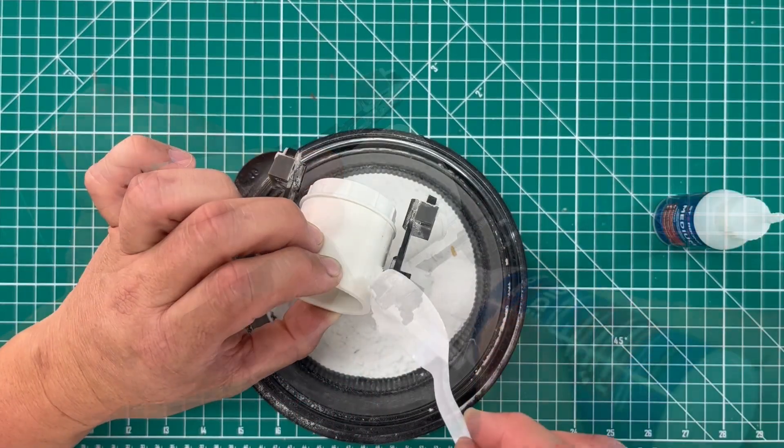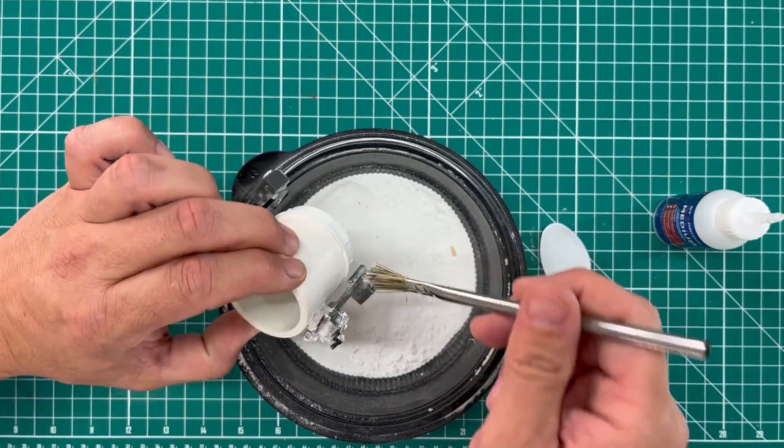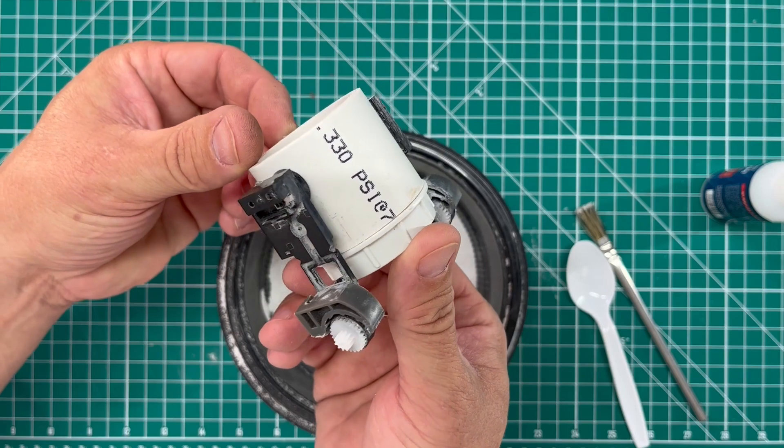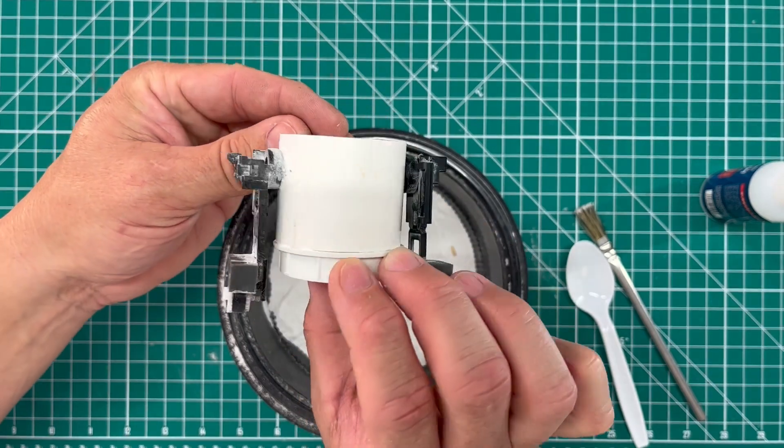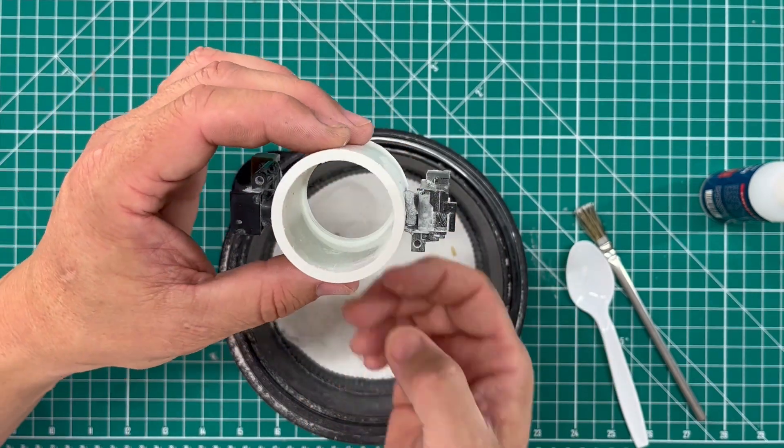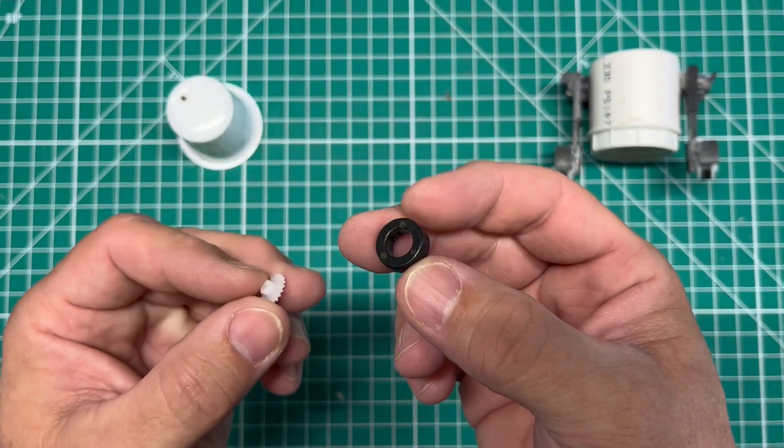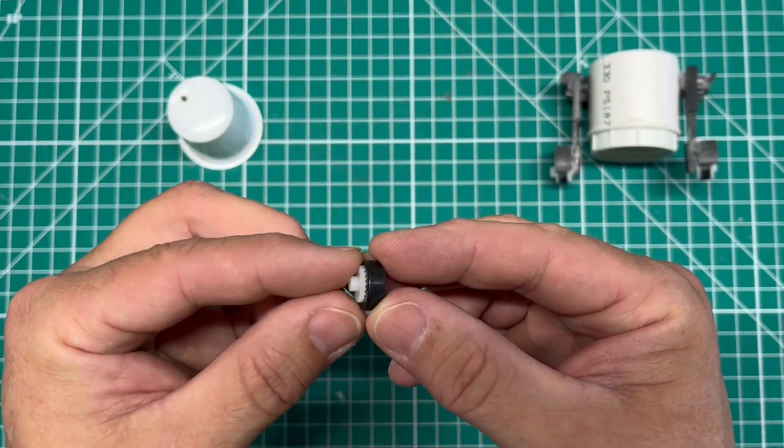Once both of the legs are in place and I'm satisfied with the look I go back and reinforce the joints with more glue and more baking powder. That's just to lock this in and make sure it stays solid. From there it's time to move on to this front wheel or this stabilizer.